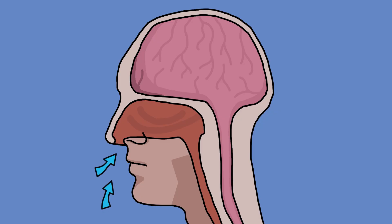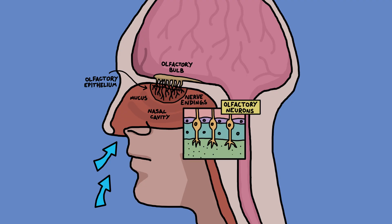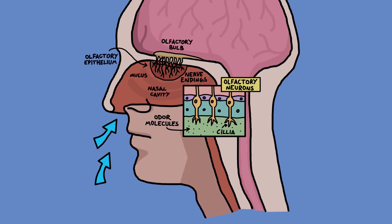When you sniff, odor molecules get sucked into your nose and then get captured by a layer of mucus and are taken to a postage stamp sized area in the top of your nasal cavity called the olfactory epithelium. This contains bundles of neurons containing special receptor sites which detect the molecules and send signals to the brain.